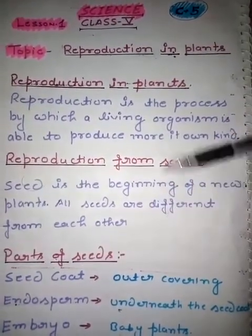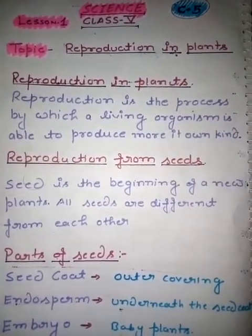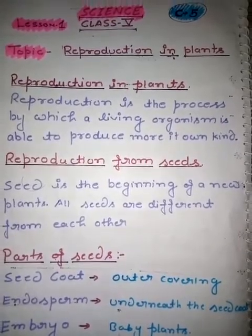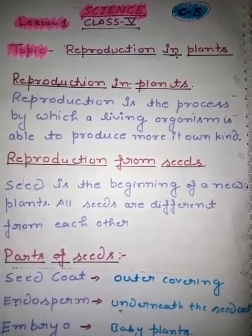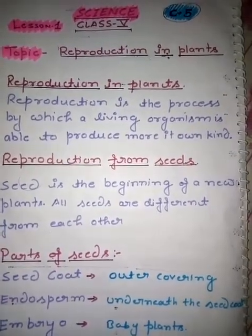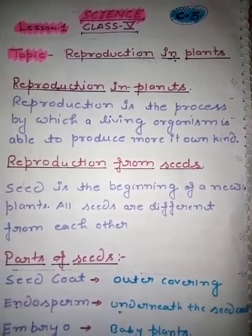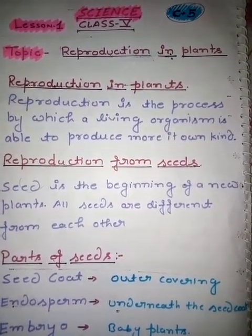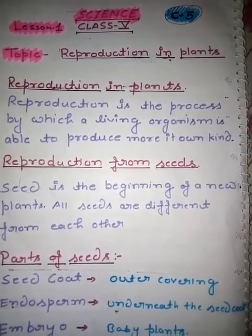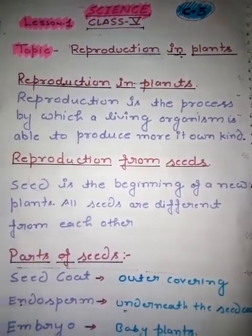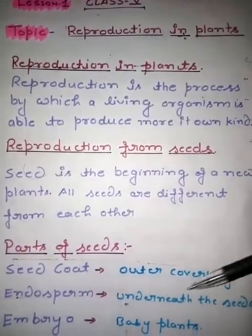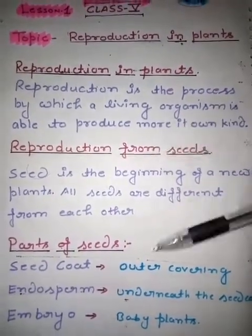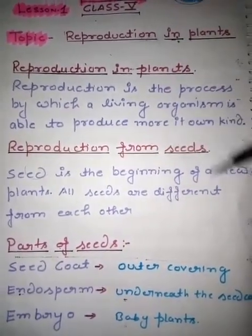Seed coat — seed coat kya hota hai? Seed coat jo hota hai woh outer covering hota hai. Yeh jo bahar ki covering hoti hai, woh kya karti hai? Protect karti hai humare embryo ko, seed ke embryo ko. Us mein ek tiny hole hota hai jahan se water enter karta hai plant ke andar, aur seed aasaani se reproduce karta hai.